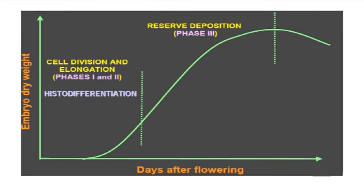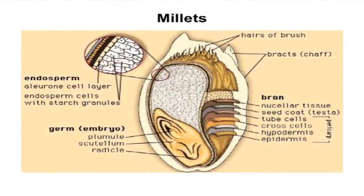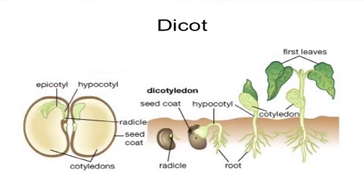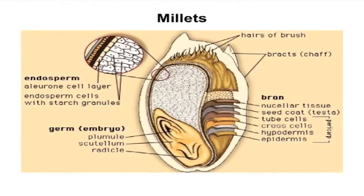In phase three, reserve deposition takes place as cell division slows down. In case of millets, the endosperm is seen to accumulate starch. As starch begins to grow, the cell wall ruptures and endosperm cells harden. In case of dicots, the endosperm is slowly absorbed in most crops except in castor and endosperm crops where they still serve as storehouses of reserve foods. In legumes, the cotyledons grow and start to accumulate protein and oil. The embryonic axis also grows linearly, and in millets it is differentiated into shoot and root in dicots.